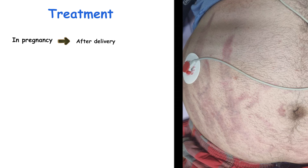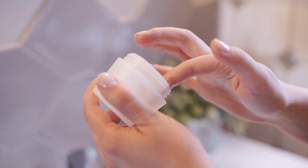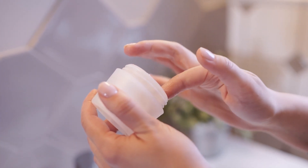Treatment differs between stria rubra and stria alba. The first-line treatment for stria rubra is pulsed dye laser therapy, which can both improve erythema and exert beneficial effects on skin collagen. Topical retinoids are an alternative for patients unable or unwilling to proceed with laser therapy. A very thin layer of retinoid is applied once nightly to the affected area for several months.